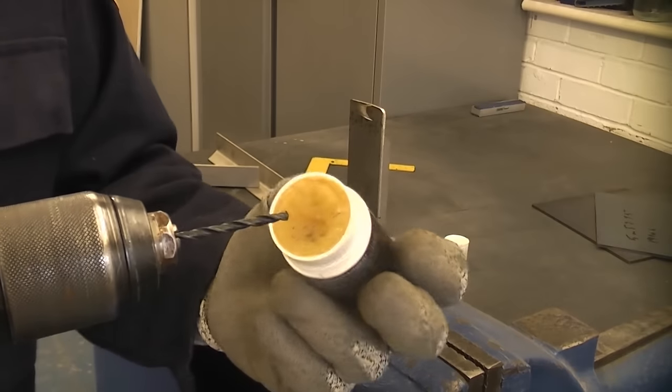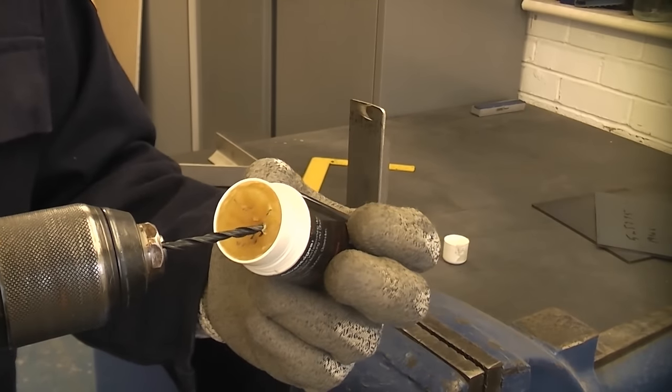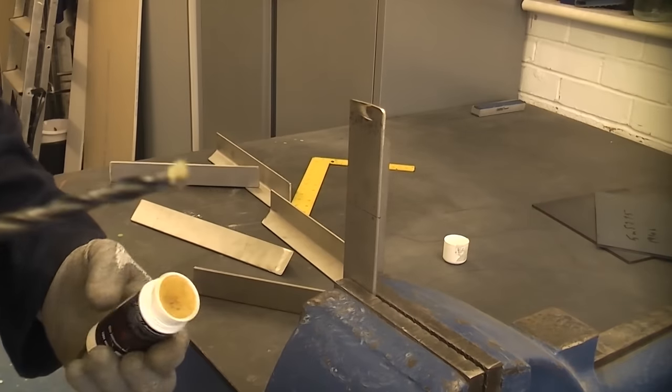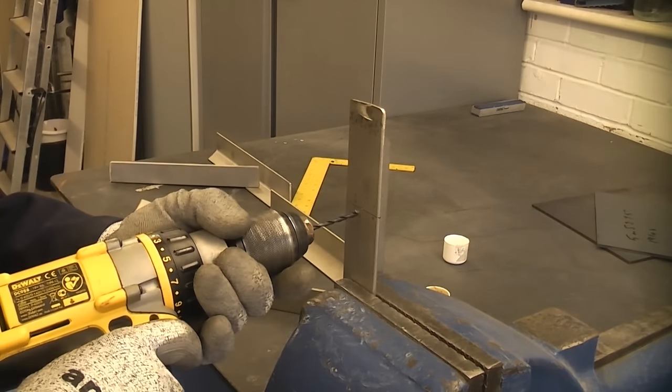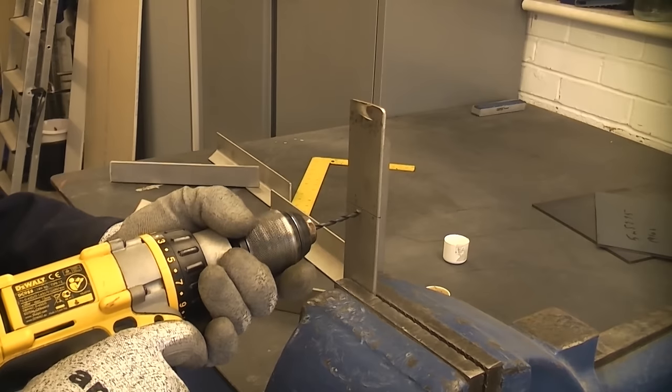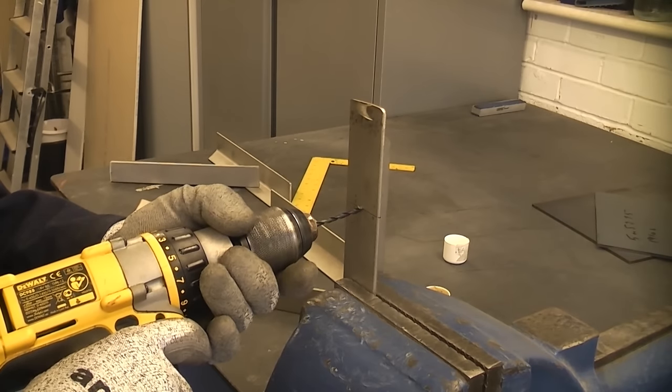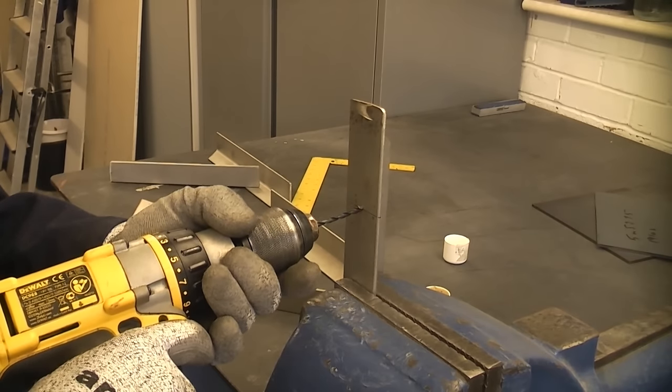I've then got a 4mm drill bit which I'm going to use as a pilot drill bit, and then I'm going to apply some cutting paste to that and then I'm going to drill the hole. It's important when you do this that you do not get the work piece hot or else you will work harden it.